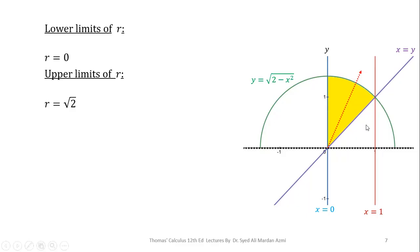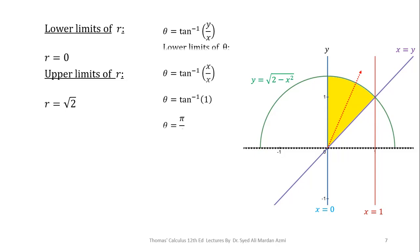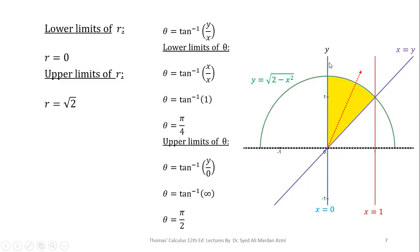In order to calculate the limits of theta, note that in the counterclockwise direction our region starts from the boundary x equal to y. We use the formula theta equals tan inverse of y over x. For the lower limit of theta, substituting y equal to x gives theta equal to tan inverse of x over x, which is tan inverse of 1, equal to pi over 4. For the upper limit, our region ends at the y-axis where x equal to 0, giving theta equal to tan inverse of y over 0, which is tan inverse of infinity, equal to pi over 2. So the limits of theta are pi/4 to pi/2.